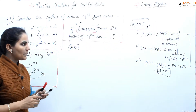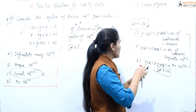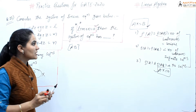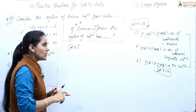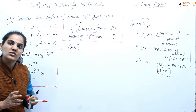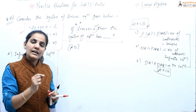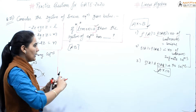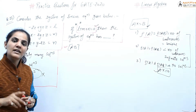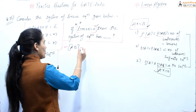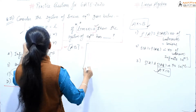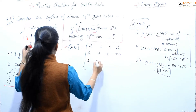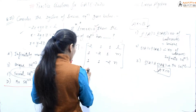Now let's set up the augmented matrix [A|b]. We only need to solve the augmented matrix to find both rank of A and rank of [A|b]. The augmented matrix is: row 1: minus 2, 1, 1, l; row 2: 1, minus 2, 1, m; row 3: 1, 1, minus 2, n. This is a 3 cross 4 matrix.